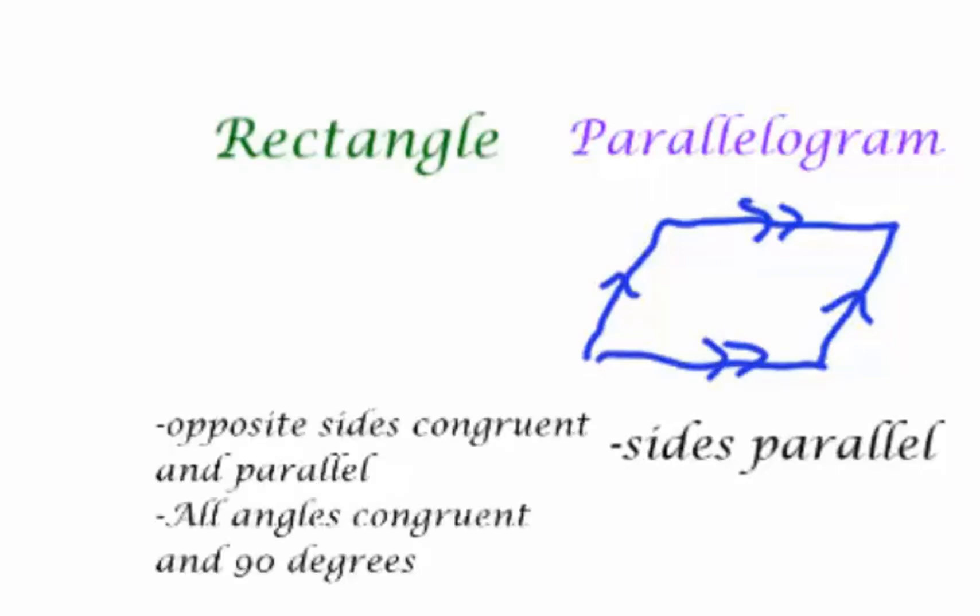With a rectangle I know that opposite sides are congruent and parallel, and more importantly that all the angles are congruent. So as I draw the rectangle, a very familiar shape, I know that the opposite sides are congruent with the single dashes, the other sides are congruent with the double dashes, I include my arrows to show they're parallel, and all the angles are 90 degrees and congruent.